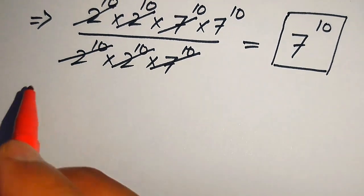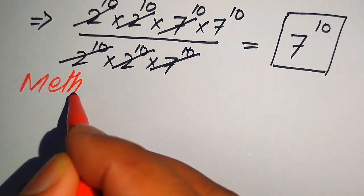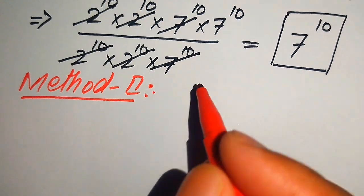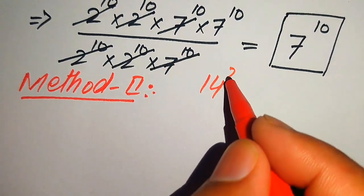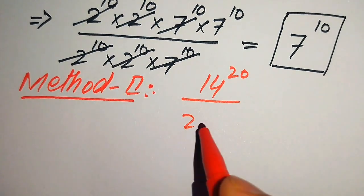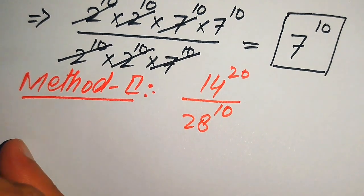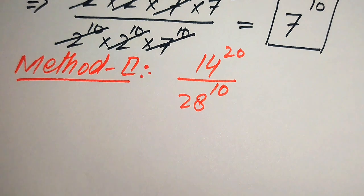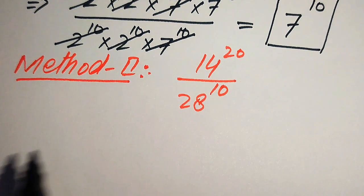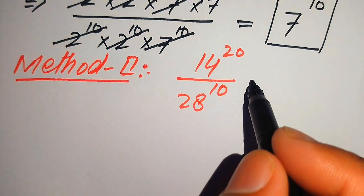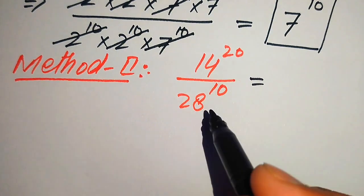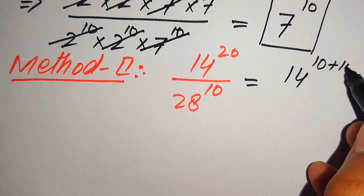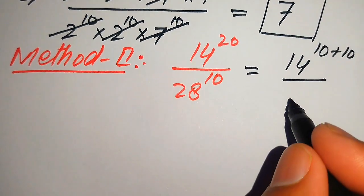Now we move to Method 2. The given expression is still 14^20 ÷ 28^10. In this method, instead of breaking the bases, I break the exponents. I write the exponent 20 as 10+10, giving us 14^(10+10) divided by 28^10.